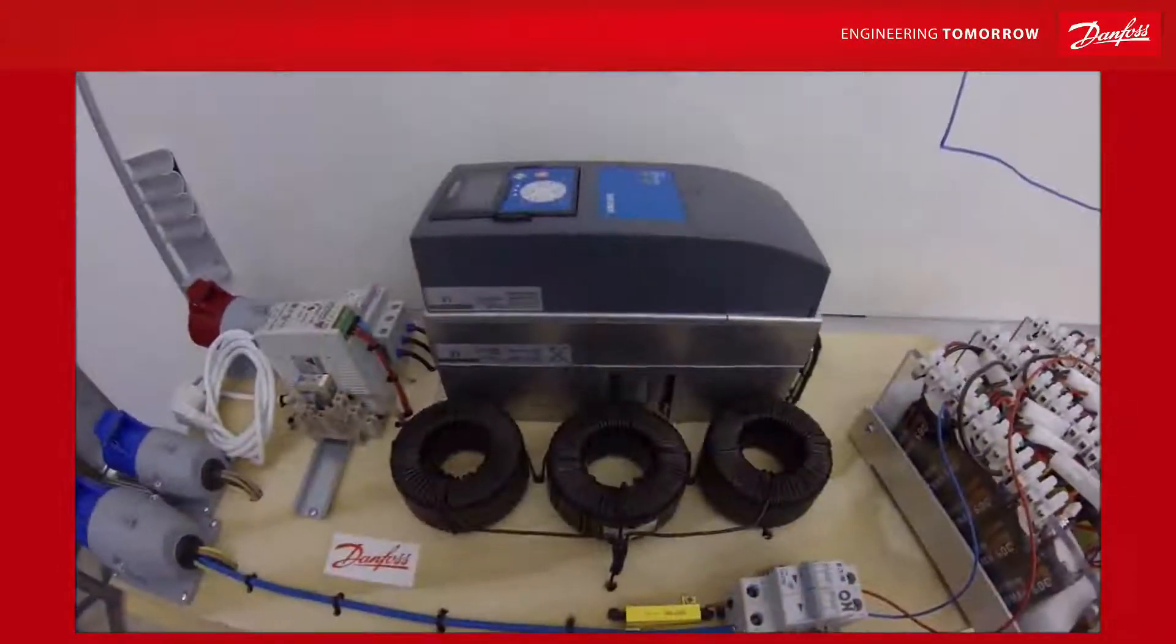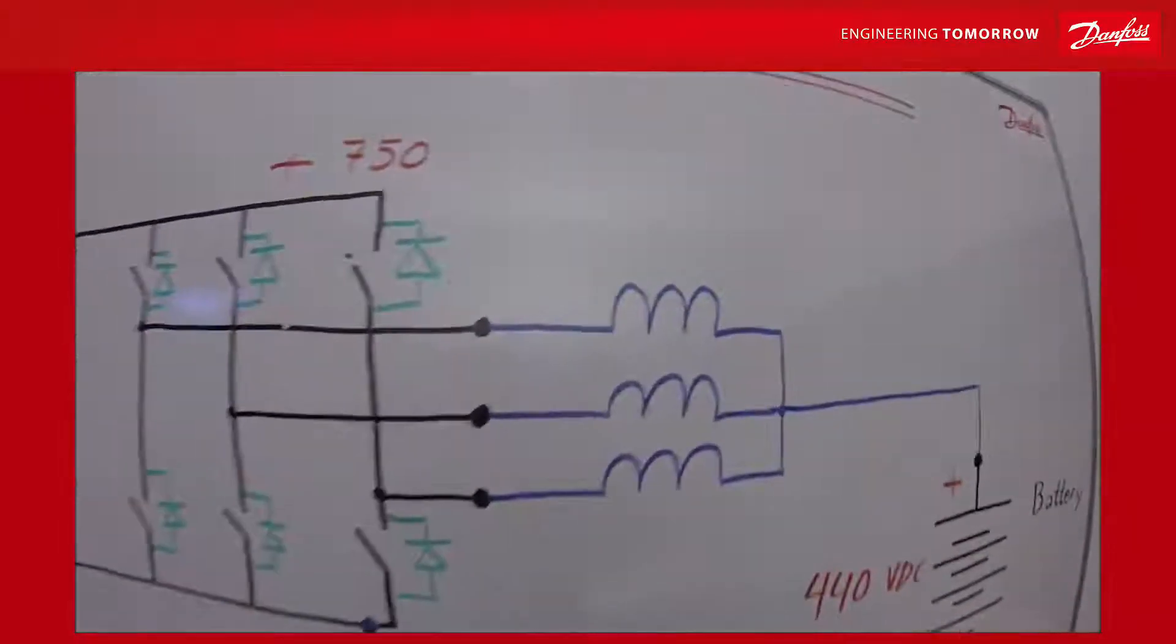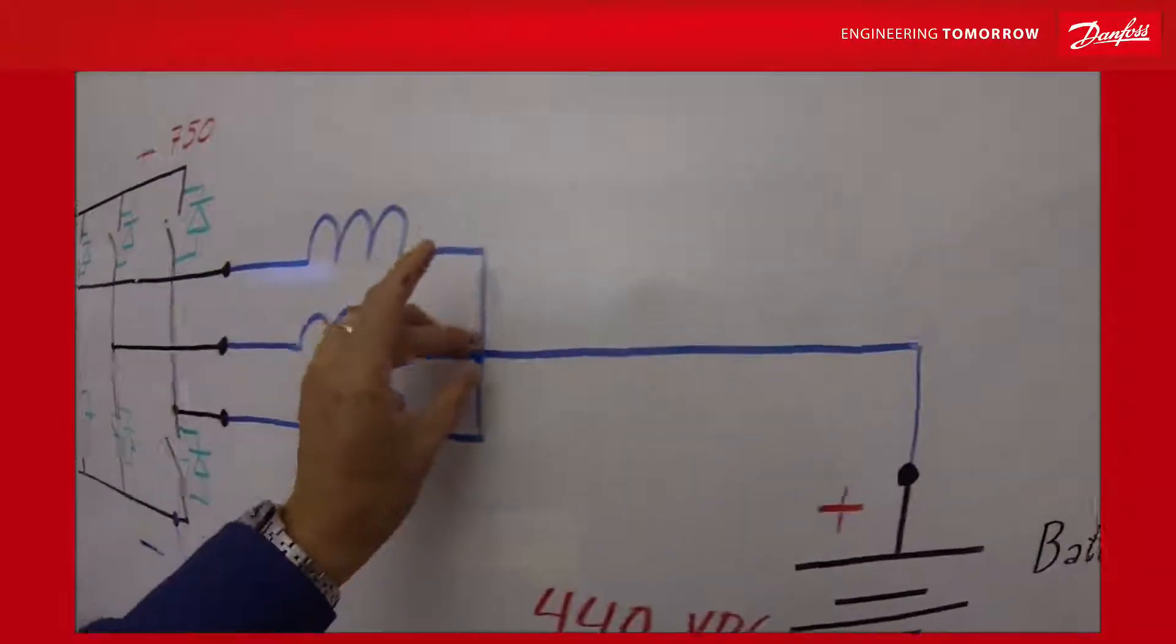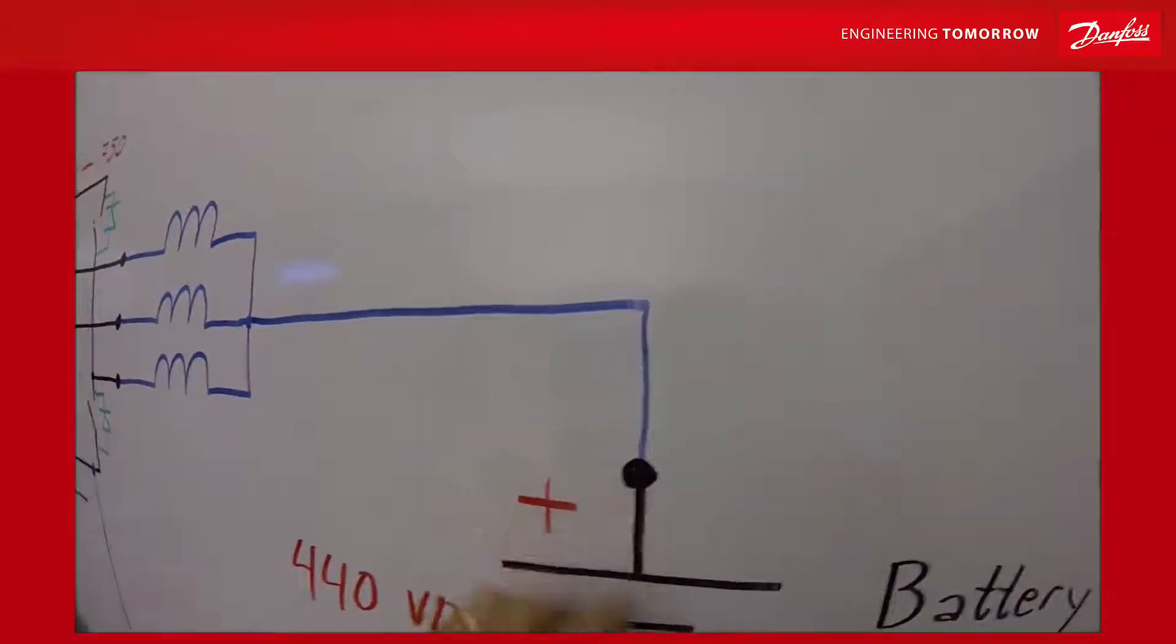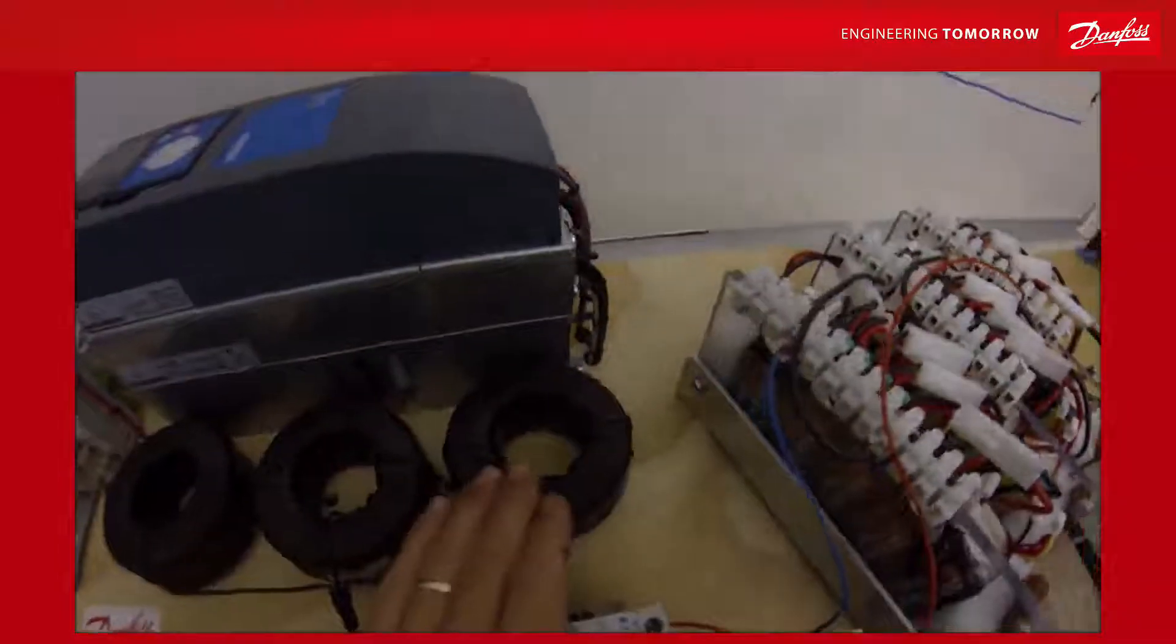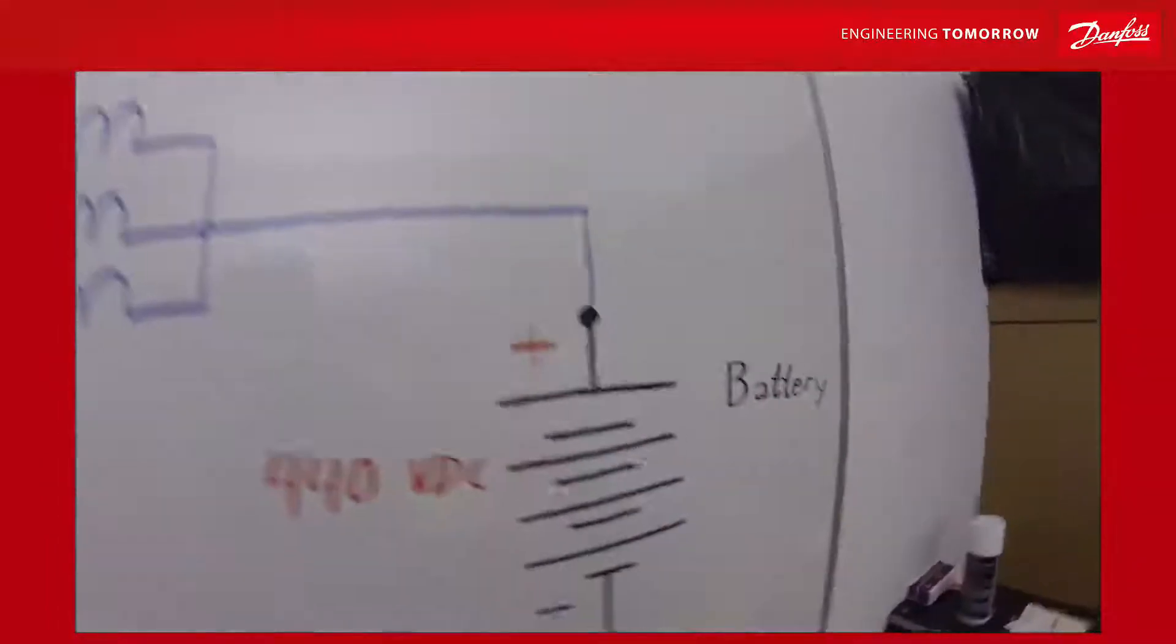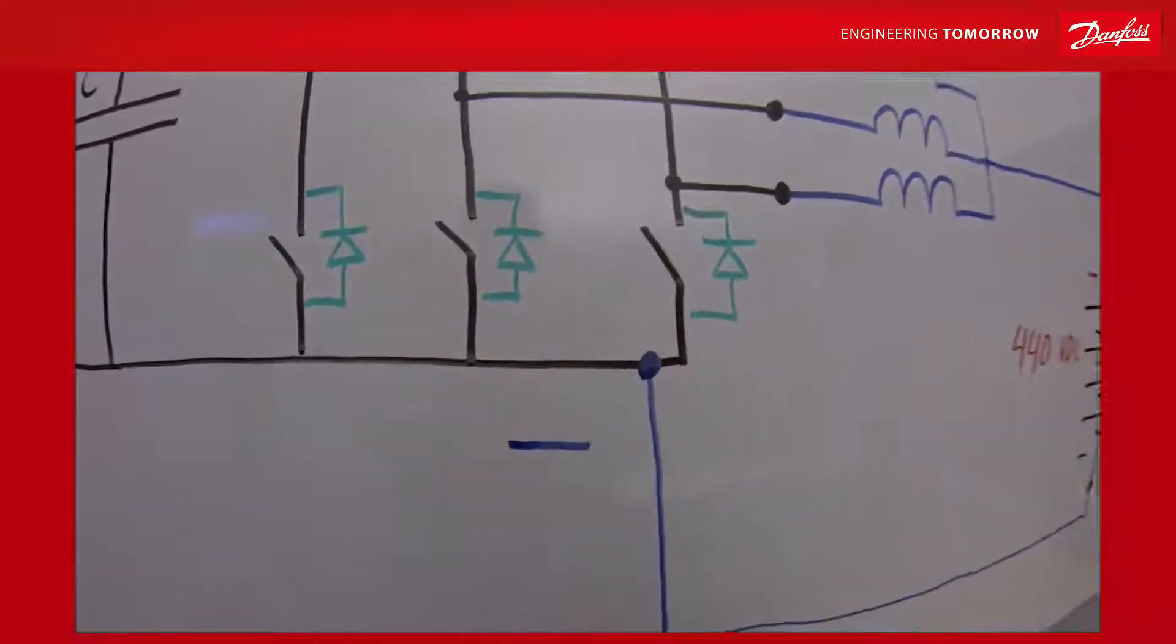To use our regular frequency converter to produce DC we have to add these three chokes, one for each motor phase. They are connected together in one point and connected to the plus. It is important that these chokes do not have the same iron core, so this must be individual chokes. The minus side of the battery is connected back to the DC link minus.